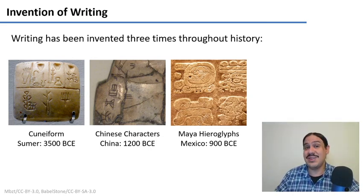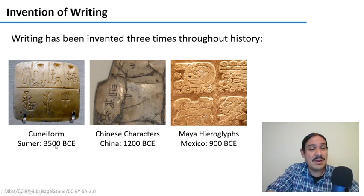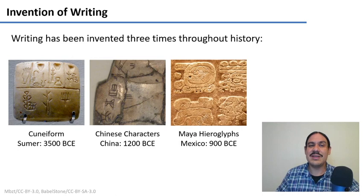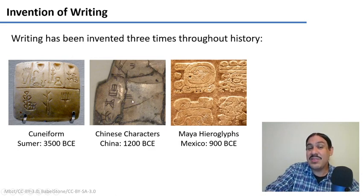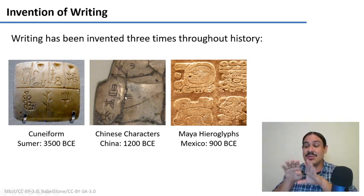Writing has been invented at least three times in history. It was invented in Sumer about five thousand years ago — this was the invention of the cuneiform writing system. Egyptian hieroglyphs were probably influenced by Sumeria. Chinese characters were created about three thousand years ago and were used for divination — symbols were written on turtle shells to see how the shell would crack under fire.